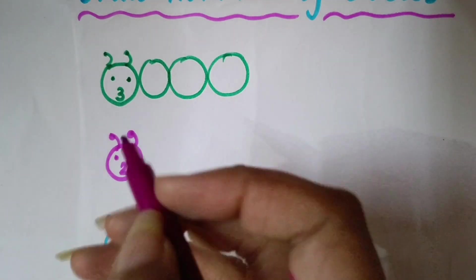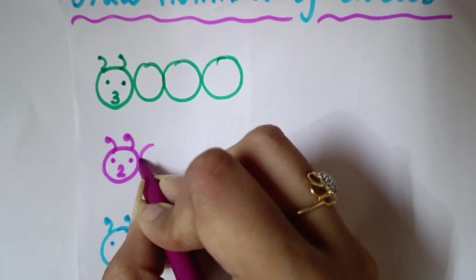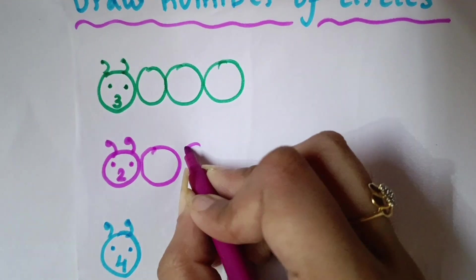Next number is 2. So, you will draw here 2 circles. 1, 2.